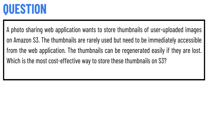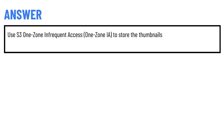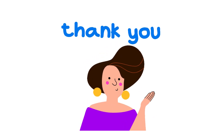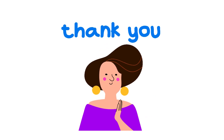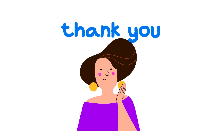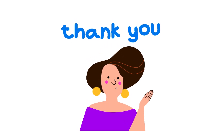The correct answer is: use S3 One Zone-IA (Infrequent Access) to store the thumbnails. That's the correct answer. If you have any questions, just leave a comment and I will be answering you as soon as I can.